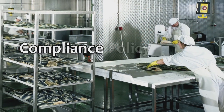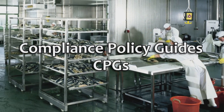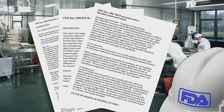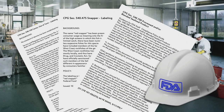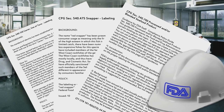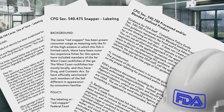Compliance Policy Guides, or CPGs, are guidance documents that provide instructions to our field staff, or policy on processing, labeling, or any other matter that concerns a product. CPGs are decision-making tools used by field staff to guide their next steps when taking possible further regulatory action.